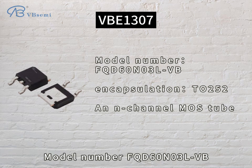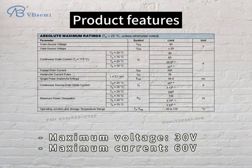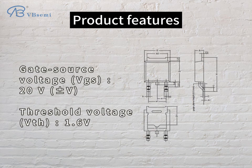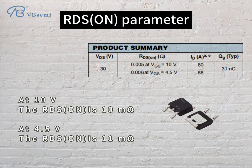Model number FQD60-N03-LVB. Product features: maximum voltage 30V, maximum current 60A, gate-source voltage VGS 20V, threshold voltage VTH 1.6V. RDS(on) parameters: at 10V the RDS(on) is 10 mΩ; at 4.5V the RDS(on) is 11 mΩ.